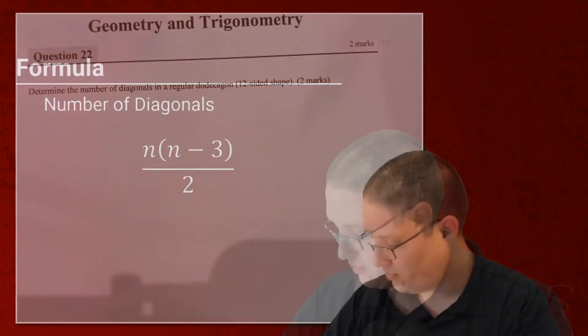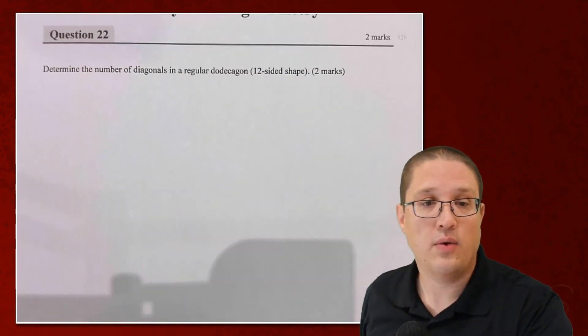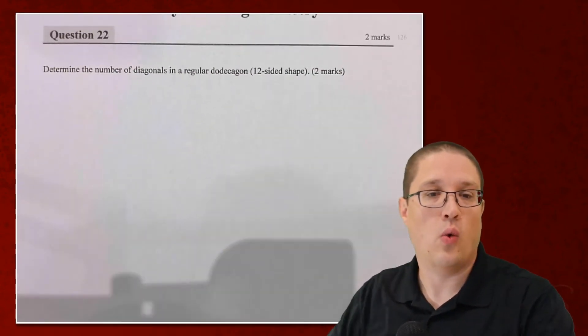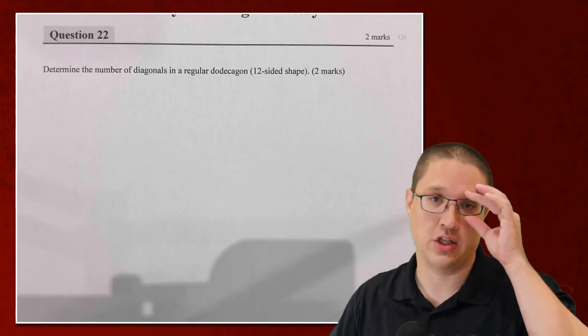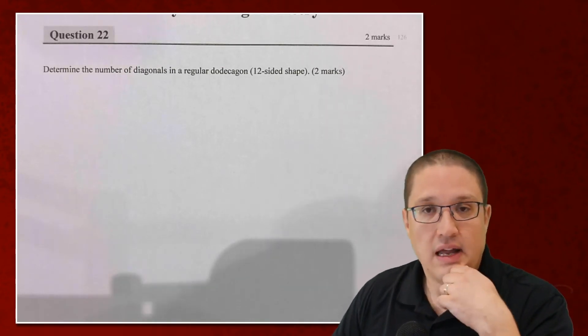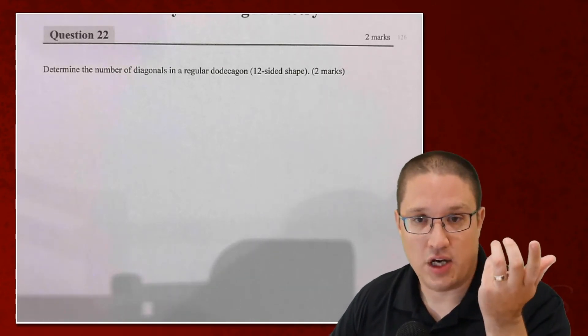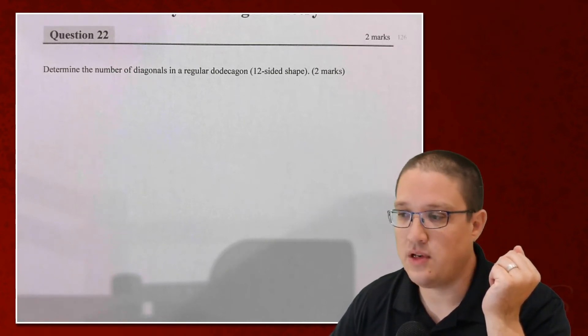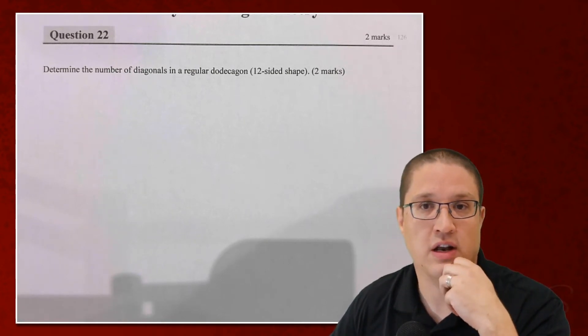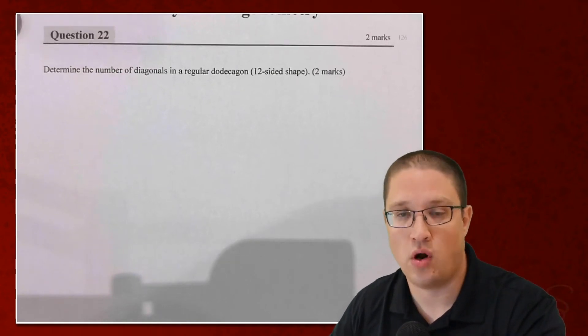So let's take a look at an example. Here we've got a question that says, what is the number of diagonals in a regular dodecagon? This is a 12-sided shape. If you'd like, you can draw your 12-sided shape, draw all the diagonals, and count it. That's going to be a real pain because you're going to have a lot of diagonals to draw there.